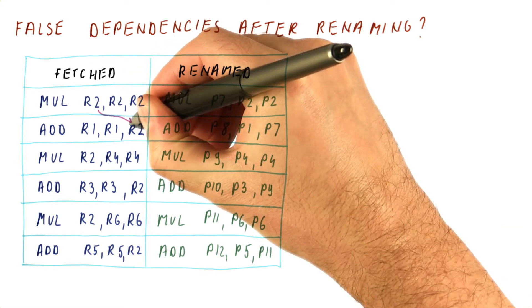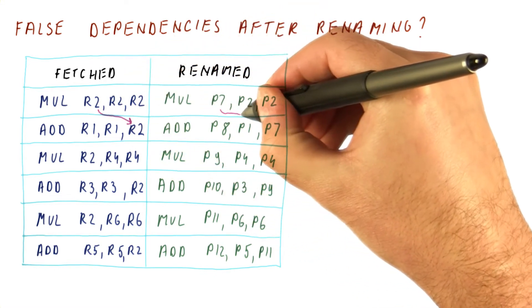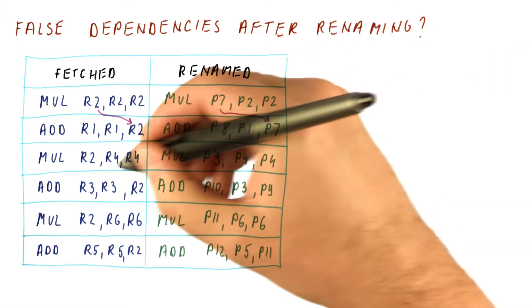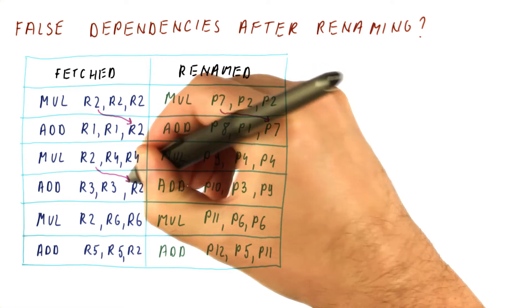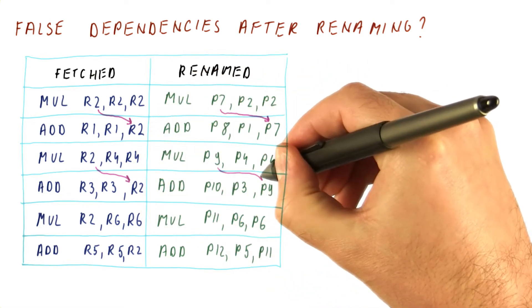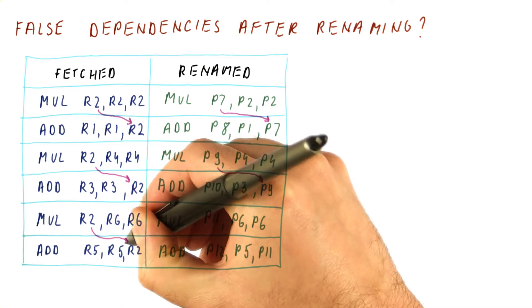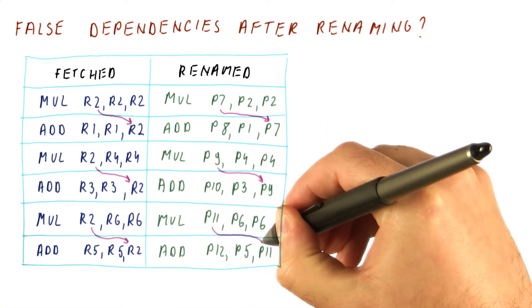Well, here we have a true dependence, and that true dependence is still there in our rename program. Similarly, here we have a true dependence, and it is still there in our rename program. And then here we have another one, and it is still there.